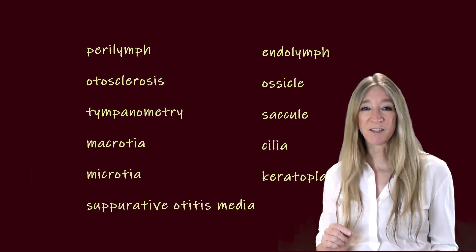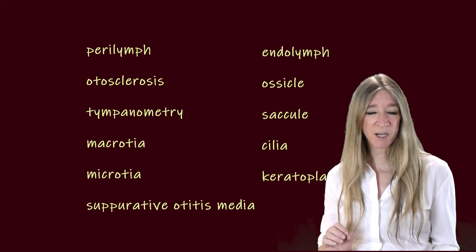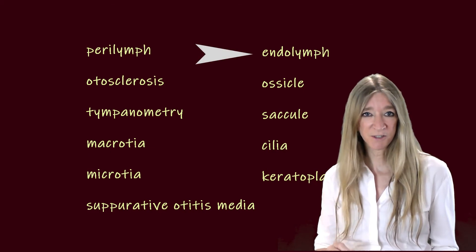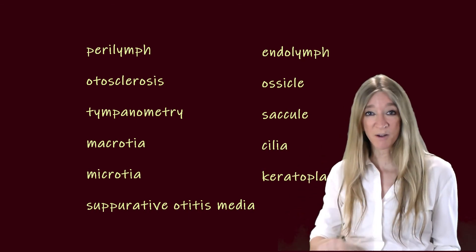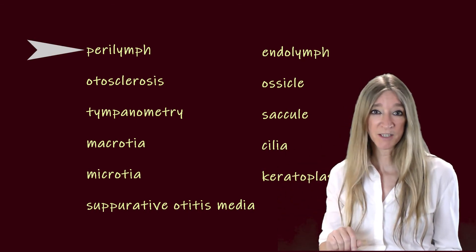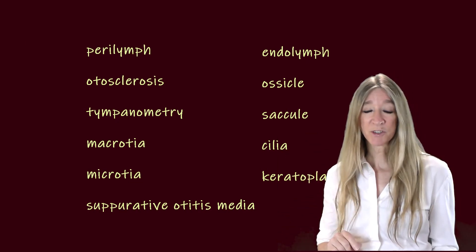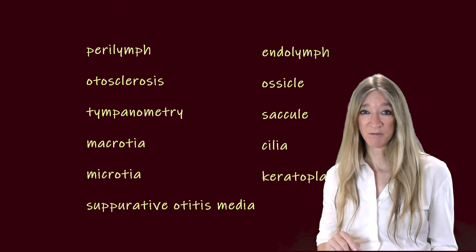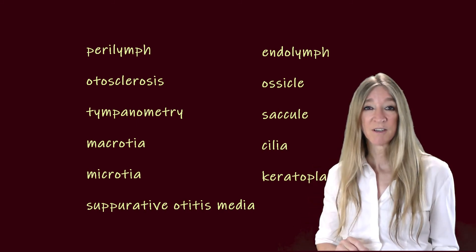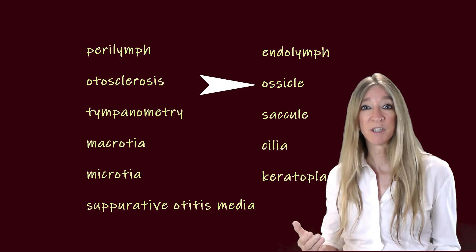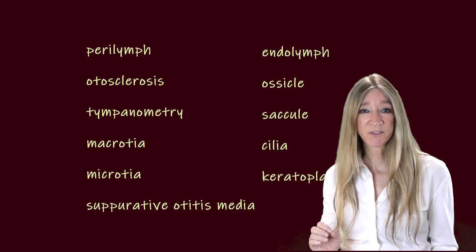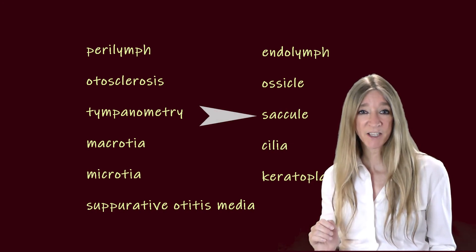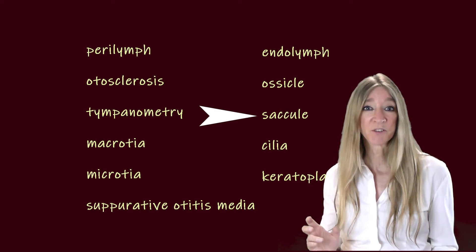How about a term for a clear fluid in the membranous labyrinth of the inner ear? Endolymph. And how about a term for an extracellular fluid that surrounds the endolymph? Perilymph. How about a term for a very small bone, especially one of those in the middle ear? Ossicle — os for bone, and -cule, a root meaning small. And how about a small membranous sac within the inner ear? Saccule — -cule also being a root that means small.